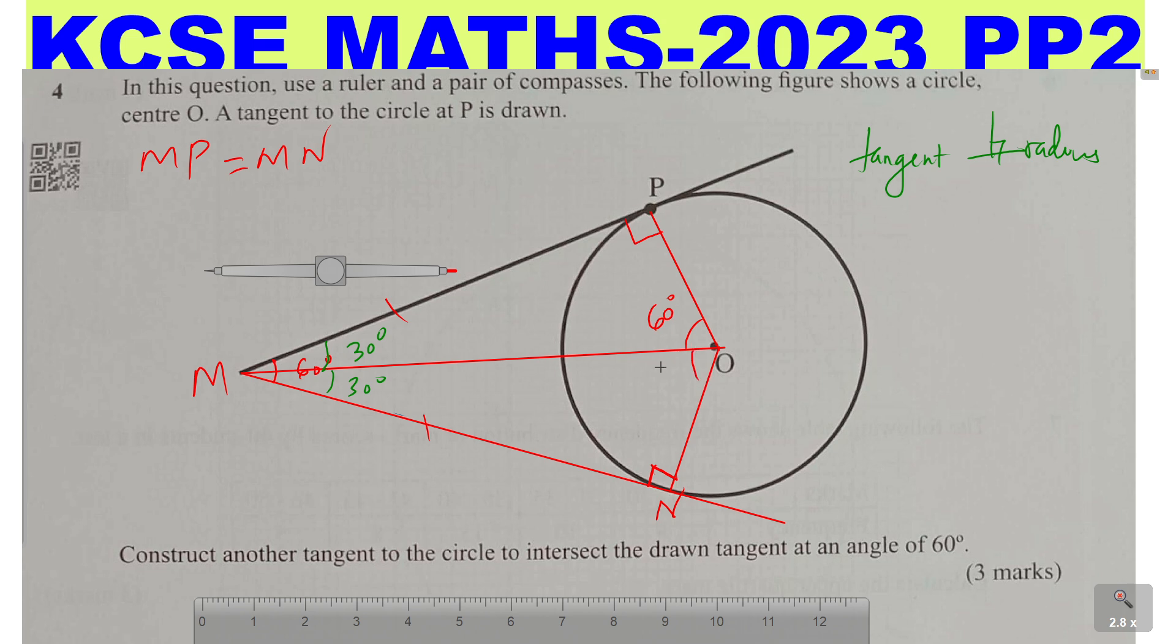Also this one should be 60 degrees. That means, if I'm able to construct this angle here at the center, 60 degrees, I'll automatically be able now to draw the tangent MN. So I'll need to construct 60 degrees here. So let me clear everything now and draw everything accurately.